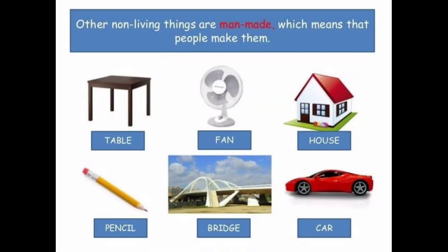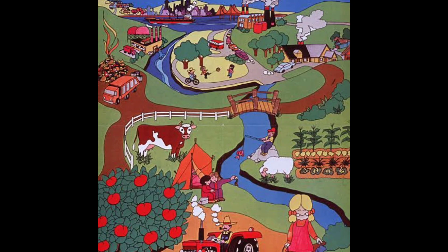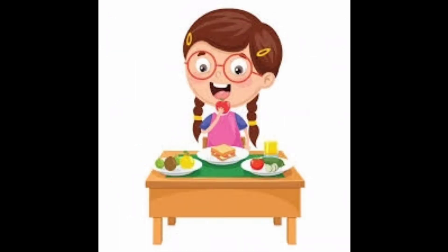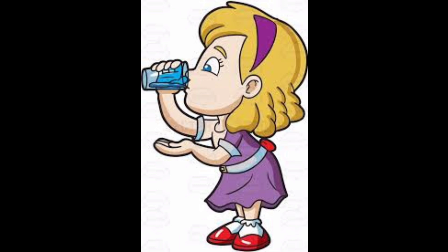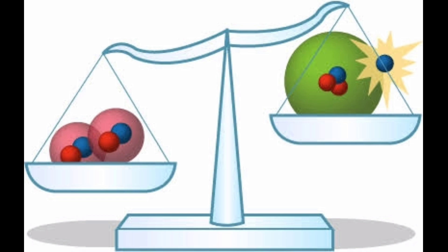Some of them are natural and some are man-made. Everything around you is matter. Anything that occupies space and has mass is called matter. The air we breathe, the food we take, the water we drink — all have matter in them. Do you know that even you are made up of matter? The space occupied by an object is called its volume. Have you understood what matter is?